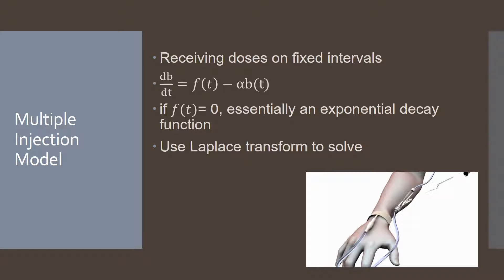This equation says that the change in the amount of drug within the blood is proportional to the injection input F(t), subtracted by the amount leaving at that certain time. If F(t) were equal to zero, we'd essentially have an exponential decay function, because the drug would just be leaving. But because we have F(t), it becomes a multiple injection model, and to solve this we're going to use the Laplace transform as well as a few other things.